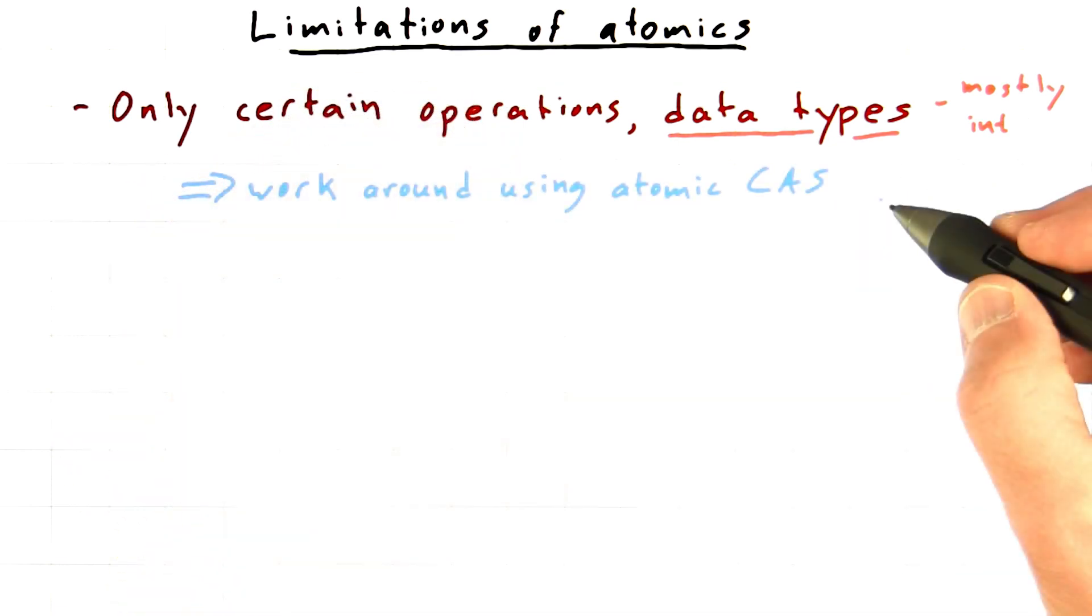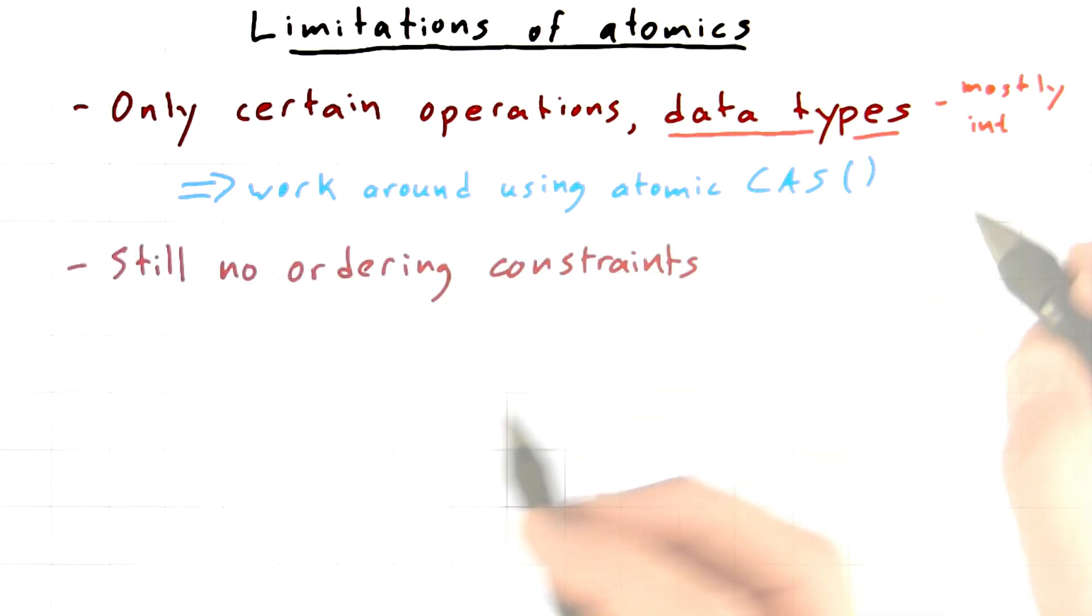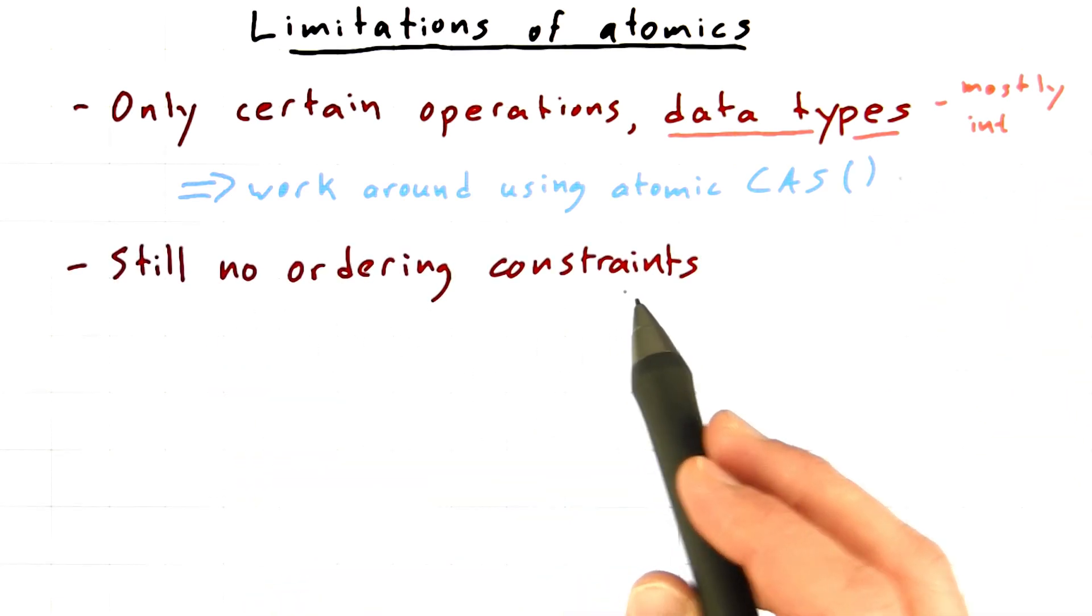There's a workaround for this. It turns out that you can implement any atomic operation by using the atomic compare and swap operation. I'm not going to go into the details. This gets into mutexes and critical sections. There's a short example in the programming guide that gives you an example of how to implement, for example, 64-bit operations using atomic CAS.